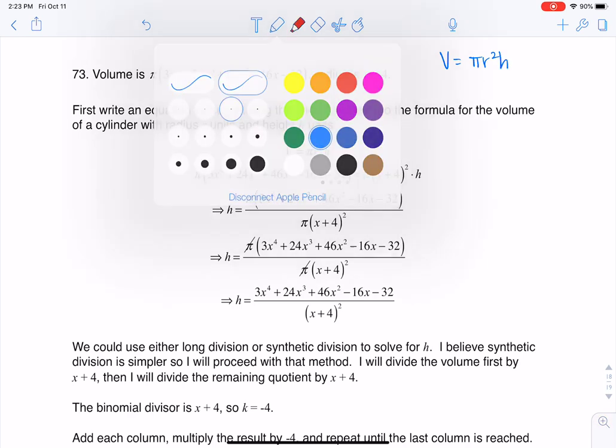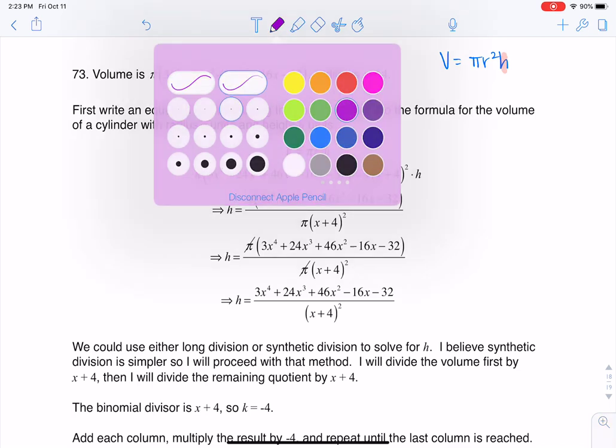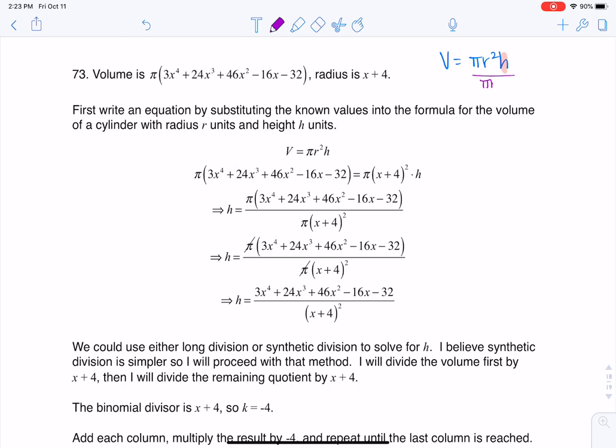Now if I want to solve for the height, what I could do is divide both sides by πr² and that would isolate my height. So I'd get this expression. I could say that my height was equal to the volume in relationship to πr².